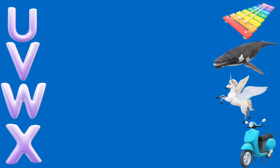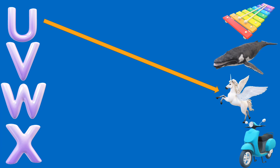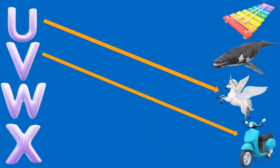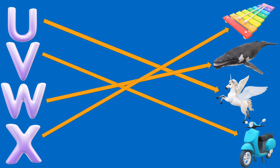Again, you have 5 seconds to guess. U is for unicorn. V is for vespa. W is for whale. And X is for xylophone.